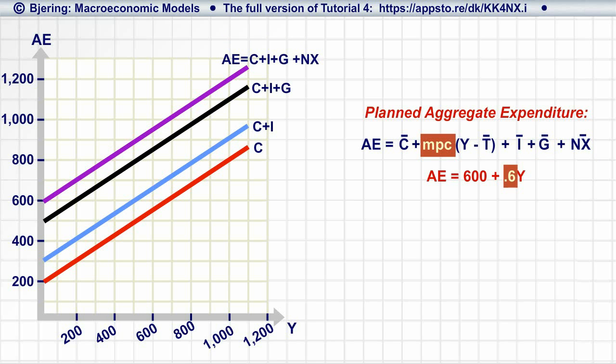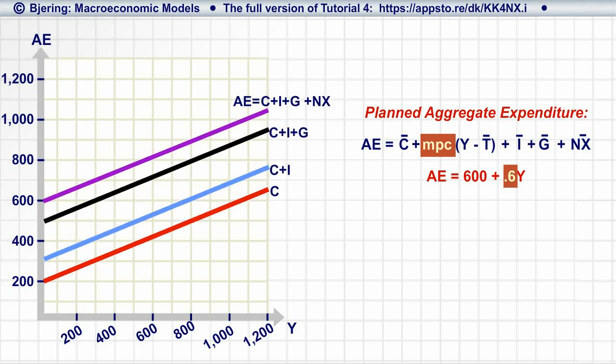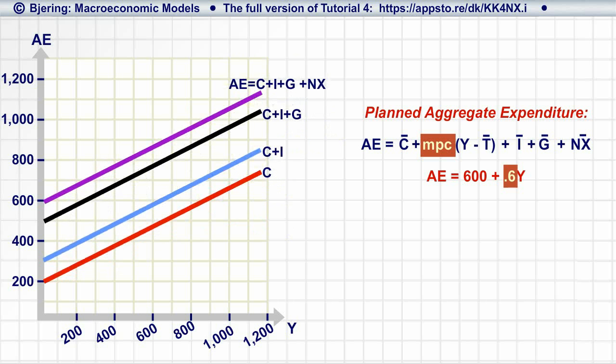Consequently, if the slope of the consumption function, that is, if the MPC, changes, the slope of the AE function changes accordingly.